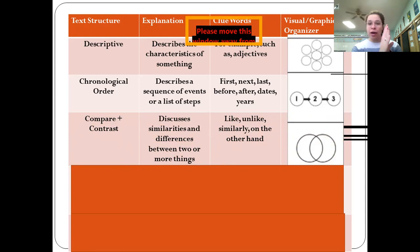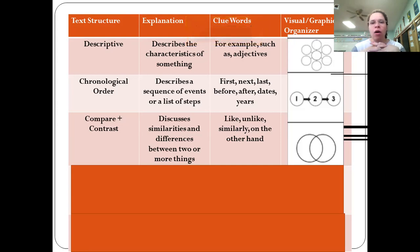You discuss the similarities and the differences between two or more things. You can have a Venn diagram with three things where you compare and contrast them. Some keywords and clue words are 'like,' 'unlike,' 'similarly,' 'on the other hand,' etc.